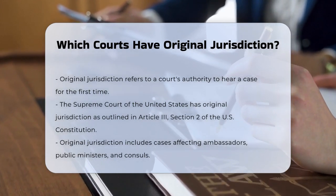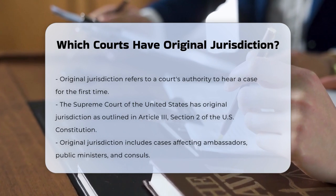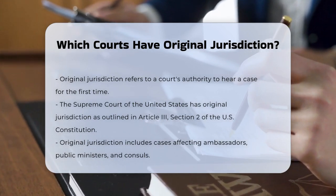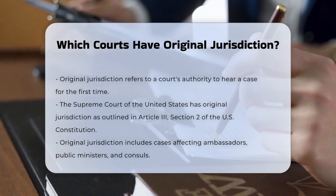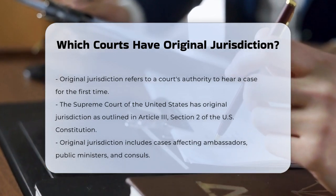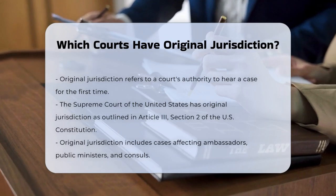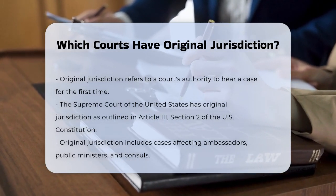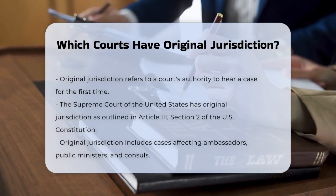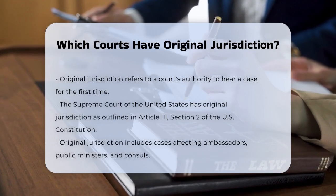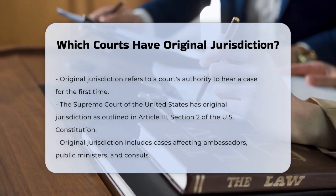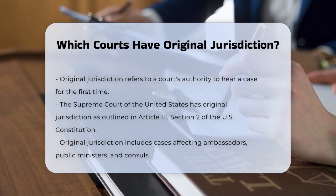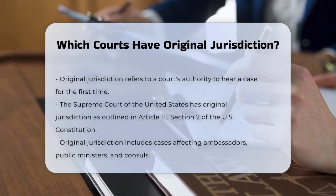The Supreme Court of the United States has original jurisdiction over a specific set of cases. This is laid out in Article 3, Section 2 of the U.S. Constitution. According to this clause, the Supreme Court has original jurisdiction in cases affecting ambassadors, other public ministers, and consuls, as well as cases where one of the 50 states is a party.